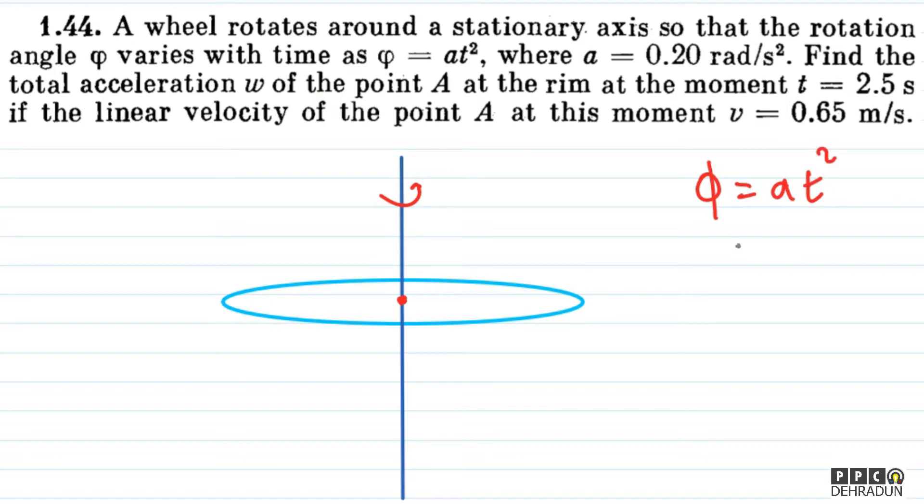Now let's understand: if phi equals at squared, then if we differentiate this, d phi by dt will be 2at. This is basically playing the role of omega. The rate at which rotation angle changes gives us angular velocity.